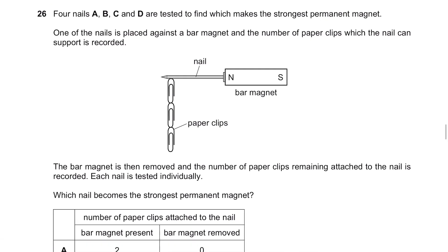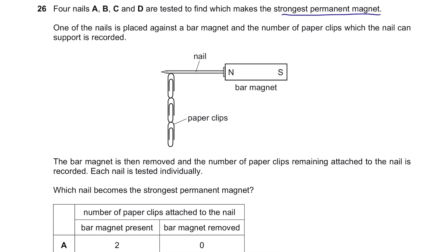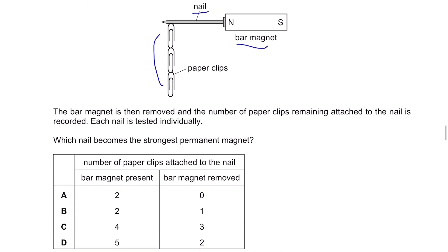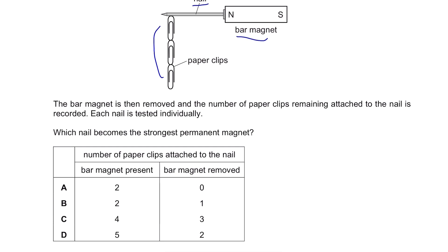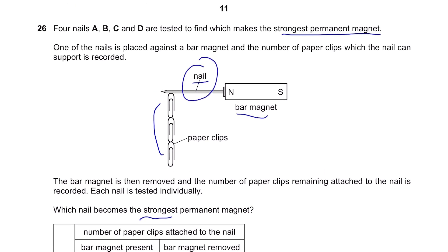Question 26. Four nails A, B, C and D are tested to find which makes the strongest permanent magnet. One of the nails is placed against the bar magnet and the number of paper clips which the nail can support is recorded. There are two paper clips attached to it through the nail to the bar magnet. The bar magnet is then removed and the number of paper clips remaining attached to the nail is recorded. Each nail is tested individually. Which nail becomes the strongest permanent magnet?